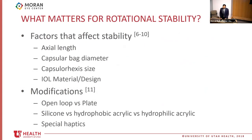Several factors contribute to toric IOL stability, including axial length, capsule bag diameter, capsulorrhexis size, and IOL material or design. The last factor is the easiest to modify. Modifications used to increase stability include using an open loop instead of a plate, using hydrophobic acrylic — which is better than hydrophilic acrylic, which is better than silicone — and specialized haptics with frosting material on the ends to increase friction and stability.